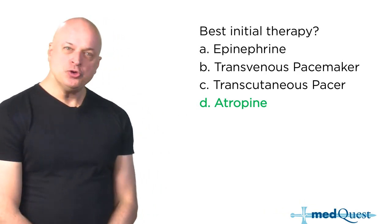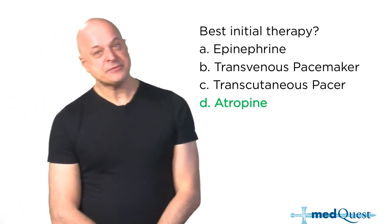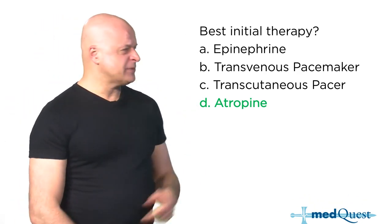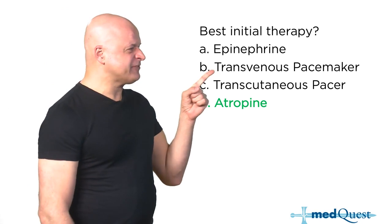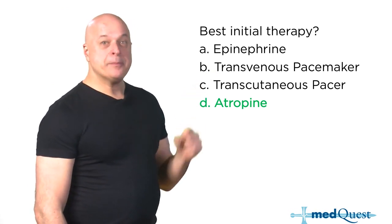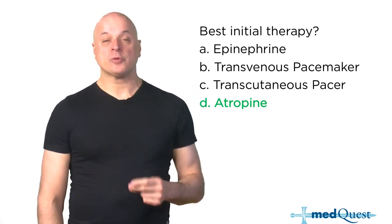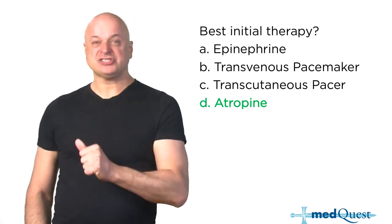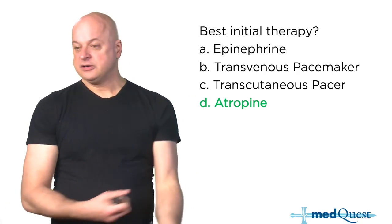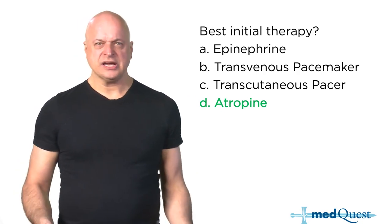You can give a pacemaker, and with third degree AV block they may definitely need a transvenous one — but atropine works instantly. A little squirt of atropine works instantly.